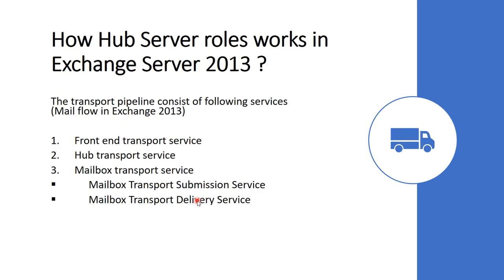Now we will see how the Hub Transport Server works in Exchange 2013. As stated earlier, the hub transport role works with the Client Access Server and the Mailbox Server in Exchange 2013. The transport pipeline in Exchange 2013 consists of the following services: the front-end transport service, hub transport service, and mailbox transport service.